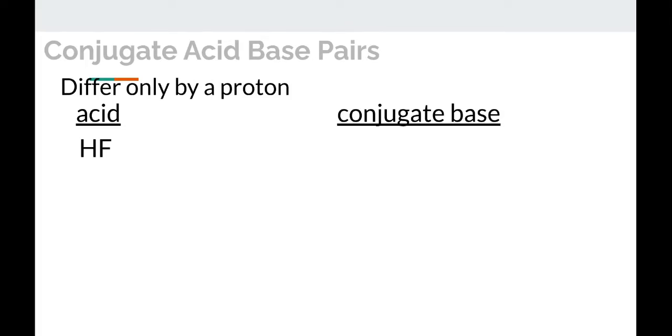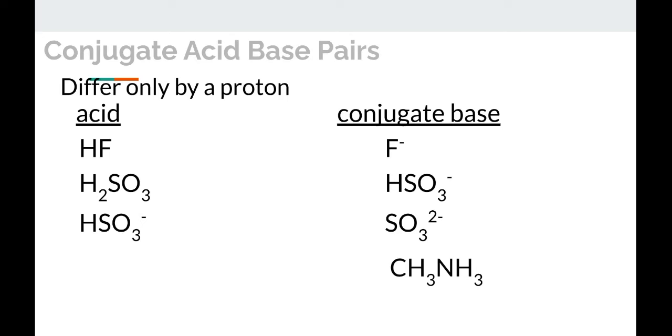Conjugate acid-base pairs differ only by the presence of a proton. So that means the base will have one less H and one less positive charge, and the acid will have one more H and one more positive charge. The conjugate base of HF would just be F-, lacking the H, one step more negative. Conjugate base of H2SO3 would be HSO3 one minus, one less H, one step more negative. Conjugate base of HSO3 one minus is SO3 two minus, one less H, one more step negative. The conjugate acid of CH3NH3 would have one more proton. So one more H, one more step positive. So CH3NH4+ would be the conjugate acid of that.